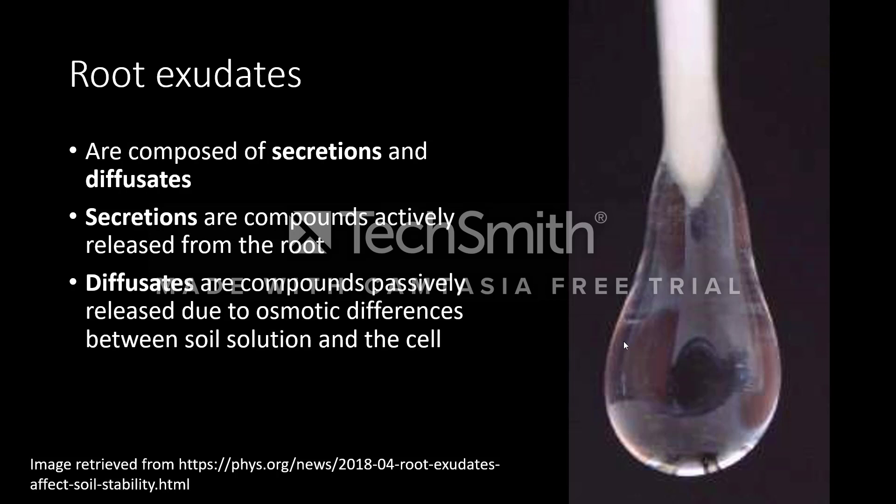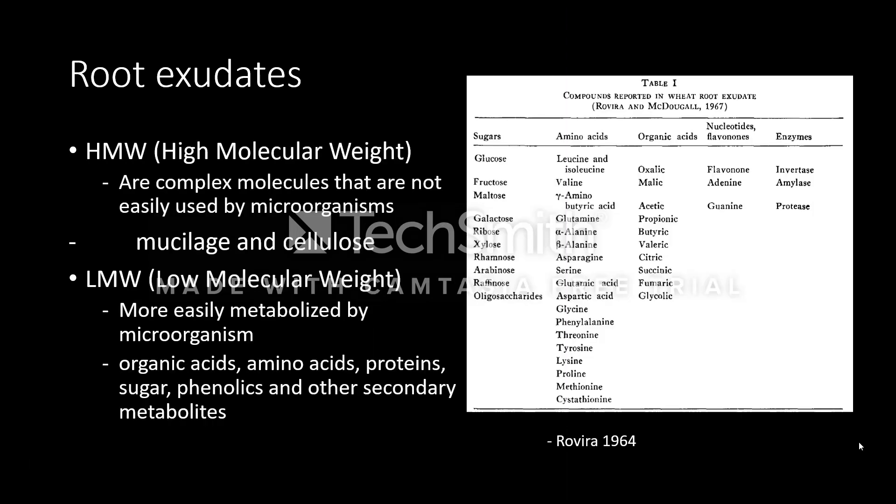These root exudates are a wide range of compounds that affect the nearby soil microbiome and initiate plant-microbe interaction. Root exudates contain different types of compounds in two categories. The high molecular weight compounds, which are the root mucilage and cellulose, are compounds not easily used by soil microbes.